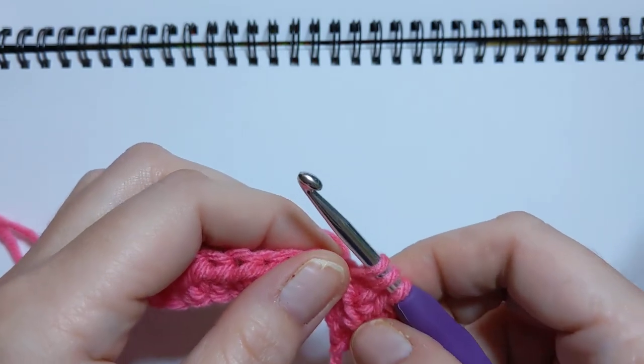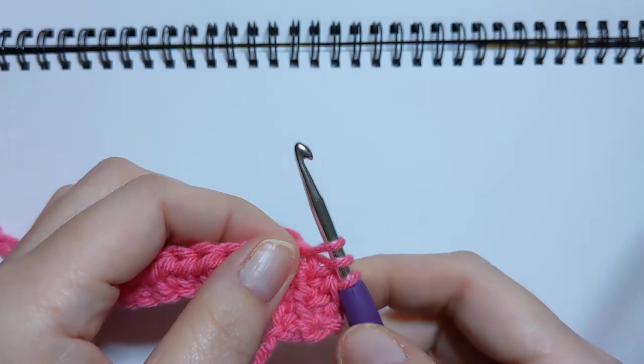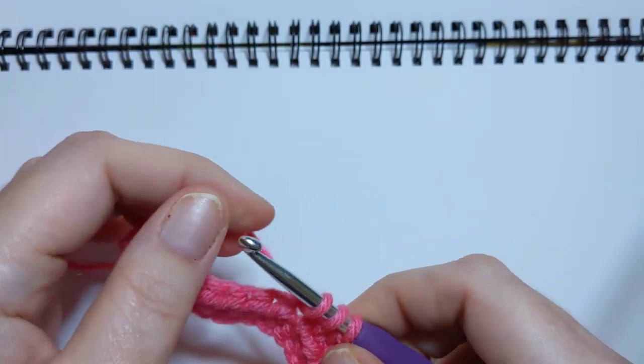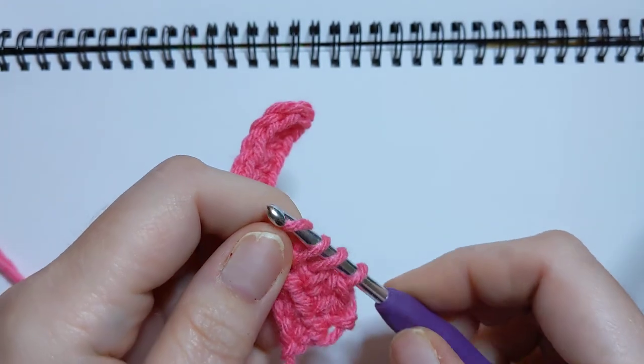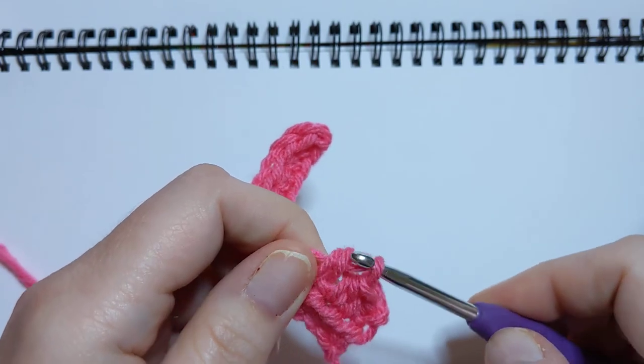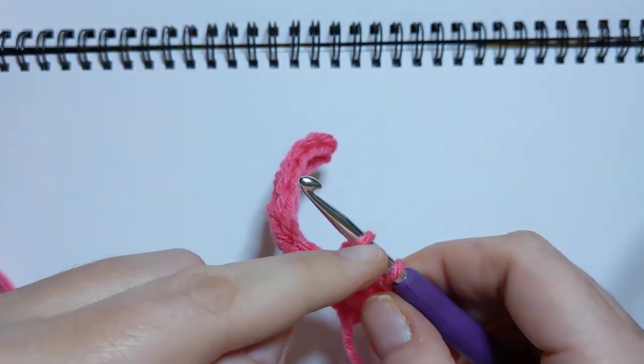Okay, now we have three on the hook, but this is where it gets a little bit different. We're going to yarn over, pull through the first two on the hook, leaving two loops on the hook.